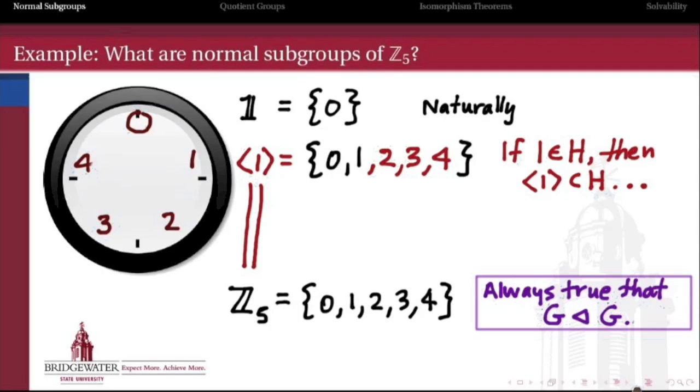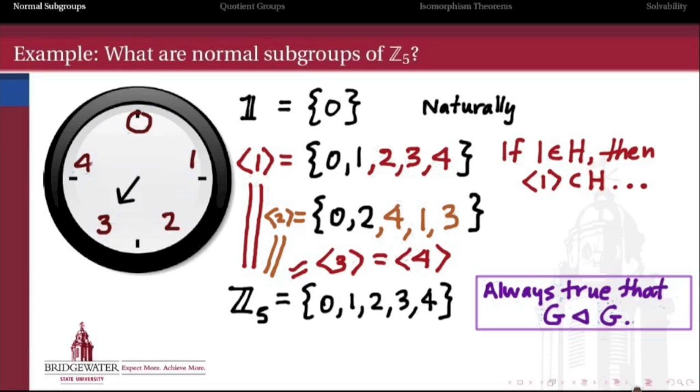So in fact, any subgroup of Z mod 5 that contains 1 has to be the entire group Z mod 5. Likewise with 2. Take a look at what the powers of 2 are in this group. 2 plus 2 is 4, plus 2 is 1, plus 2 is 3, plus 2 is 0. So in fact, the cyclic subgroup generated by 2 is all of Z mod 5 as well. Likewise with 3, 4, and 3 and 4. So in other words, 1, 2, 3, and 4, all of the non-identity elements of Z mod 5 generate the entire group Z mod 5. So in fact, there are no normal subgroups other than the trivial subgroup and the whole group itself. So Z mod 5 is in fact a simple group because it has no examples of non-trivial proper normal subgroups.